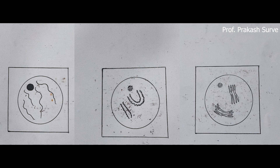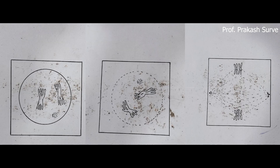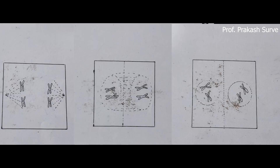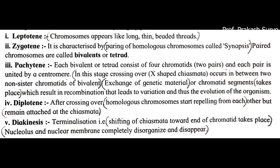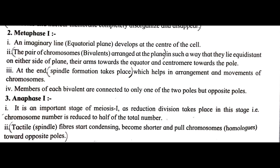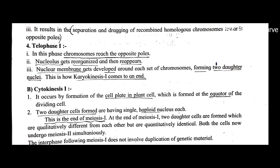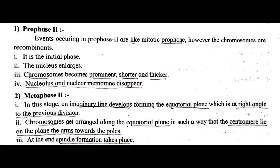Next is spot G, with meiosis slides or maybe a photograph. Any one stage will be there, shown as a photograph without the name. The possible stages are: Leptotene, Zygotene, Pachytene, Diplotene, Diakinesis, Metaphase I, Anaphase I, Telophase I, Prophase II, Metaphase II, Anaphase II, and Telophase II. You have to identify the stage and write one or two characteristics about that particular stage, whether it is a photograph or a slide under the microscope.